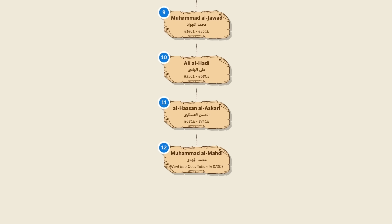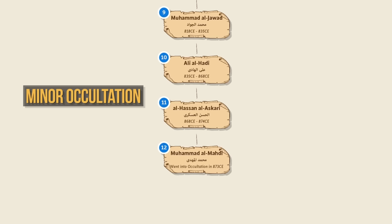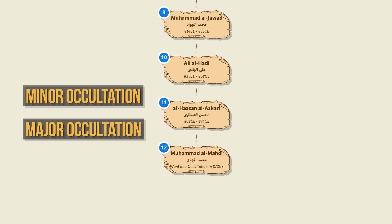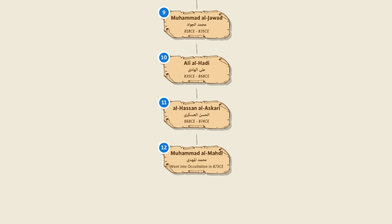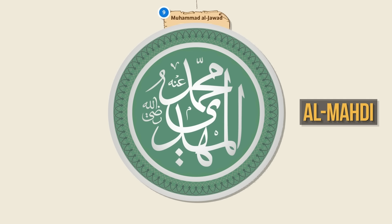From 873 to 941, Muhammad al-Mahdi is said to have been in minor occultation, meaning he was alive and in hiding. However, in 941, he is said to have gone into what's called major occultation, which means that he's alive through God's will and his life has been prolonged, but he is hidden from everyone and does not communicate. Twelvers believe that he will return from major occultation near the end of time — this is why he's called al-Mahdi, a messianic figure prophesied by the Prophet Muhammad to appear near the end of days. Throughout history, various people have claimed to be al-Mahdi.